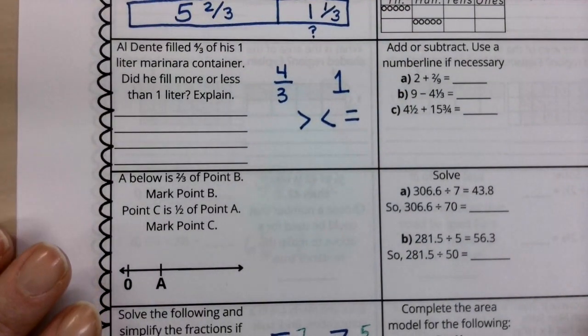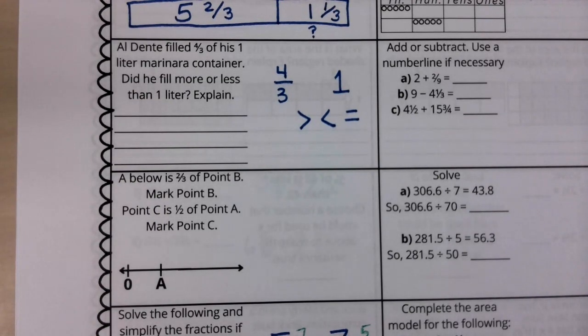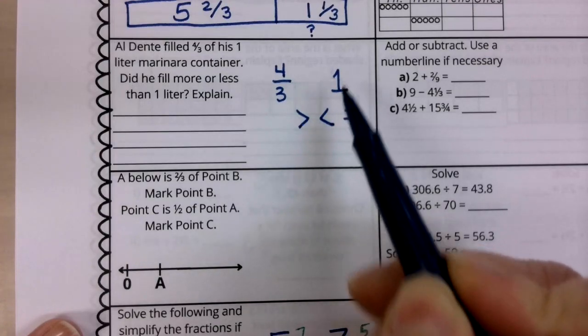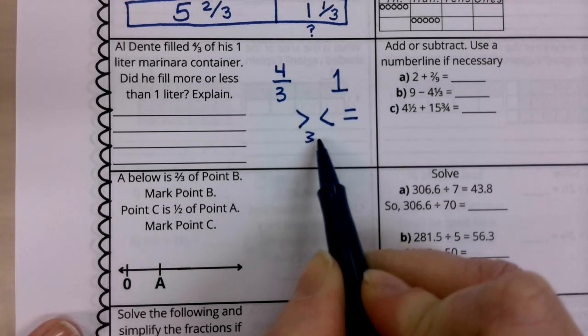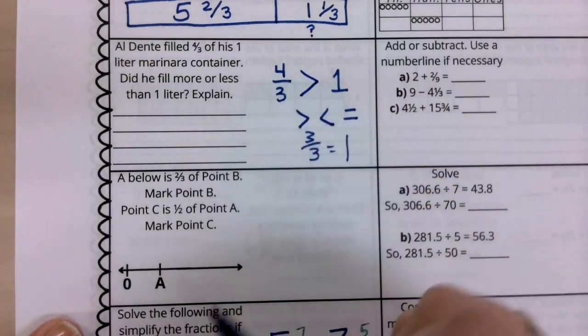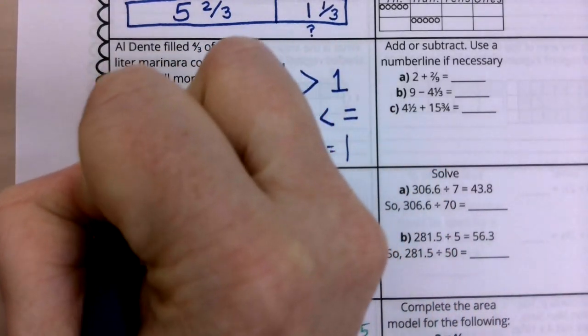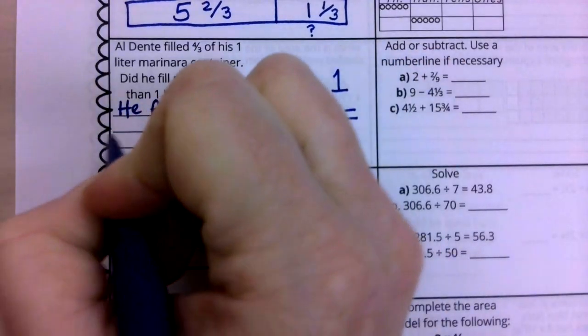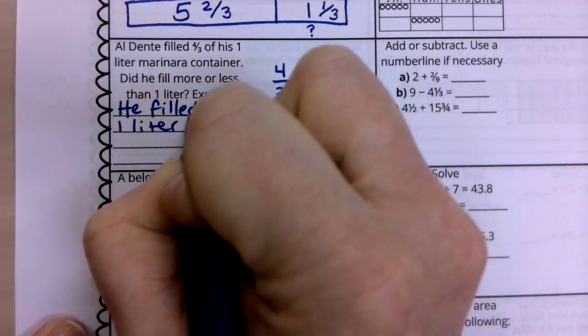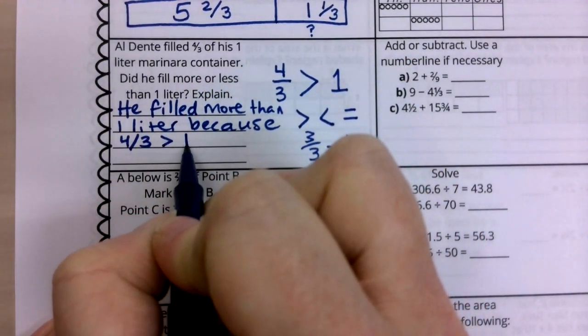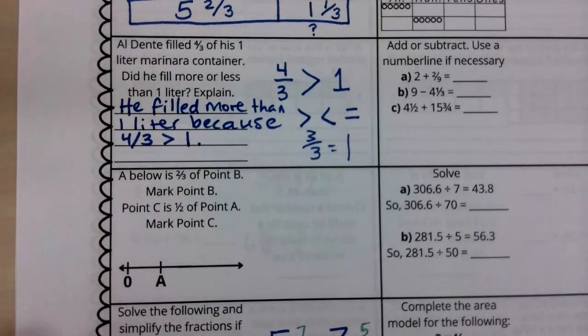Our next question says, Al Dente filled four thirds of his one liter marinara container. Did he fill more or less than one liter? So really what we're asked here is like a comparison. Is four thirds greater than one, less than one, or equal to one? We know it's not equal to one because three thirds would be equal to one. This numerator is four. So therefore, I know this is greater than one whole. Now we are asked to explain. So we are going to say that he filled more than one liter because four thirds is greater than one. So really he has an extra one third of a liter.